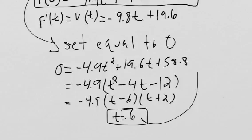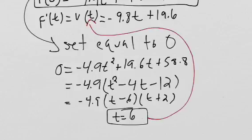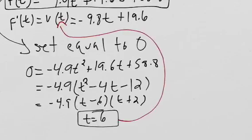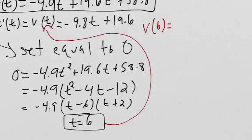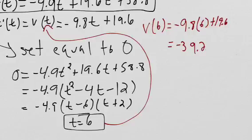We're going to take this and plug it back in for the velocity function. So take it up here and we're going to plug it in right there. So we get V of six equals negative 9.8 times six plus 19.6. And then that gives us, so if you do that math out, you get negative 39.2 feet per second.